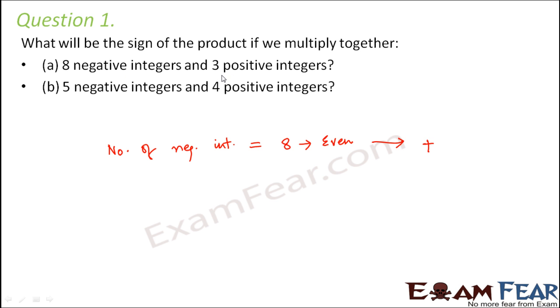And in the first case, you also have 3 positive integers. Now number of positive integers is 3. So for positive integers, anyways the product will be positive. Therefore overall the sign of the product will be positive.